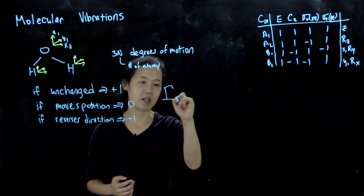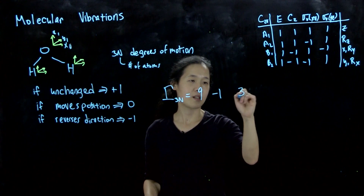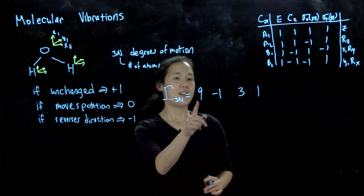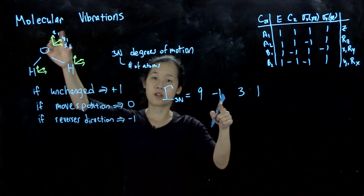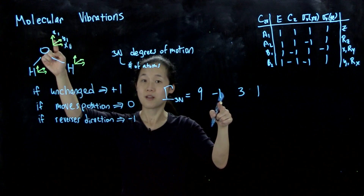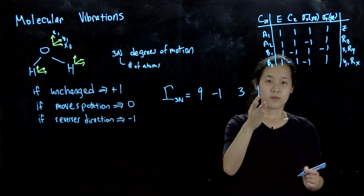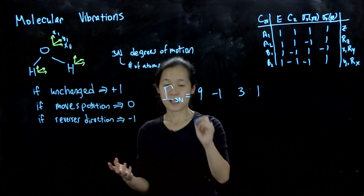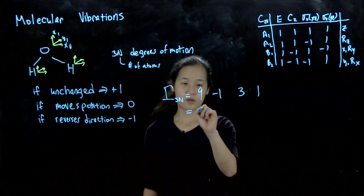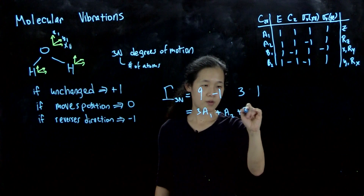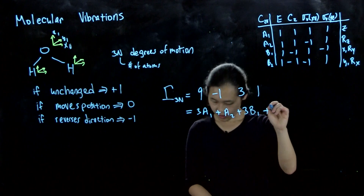We got Γ₃ₙ equal to 9, −1, 3, 1. The 9 is because we have 9 things; the −1 is for the C₂ operation where only the oxygen atom is considered — z stays the same but x and y both become −1, so 1 minus 2 equals −1. Then 3 and 1. We were able to show that when we reduce this down, it equals 3a₁ + a₂ + 3b₁ + 2b₂.